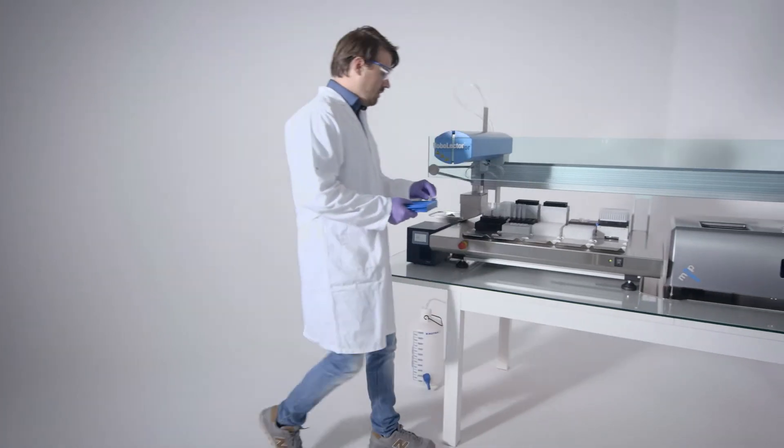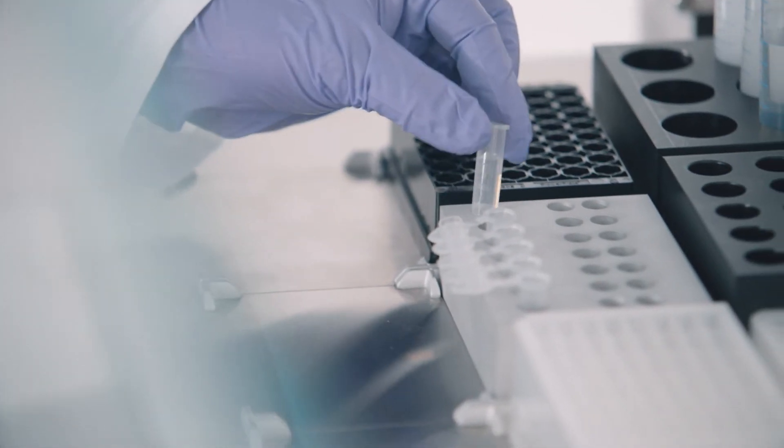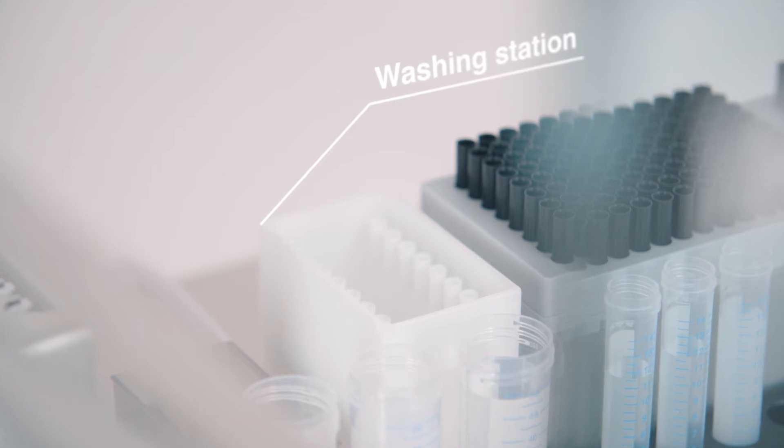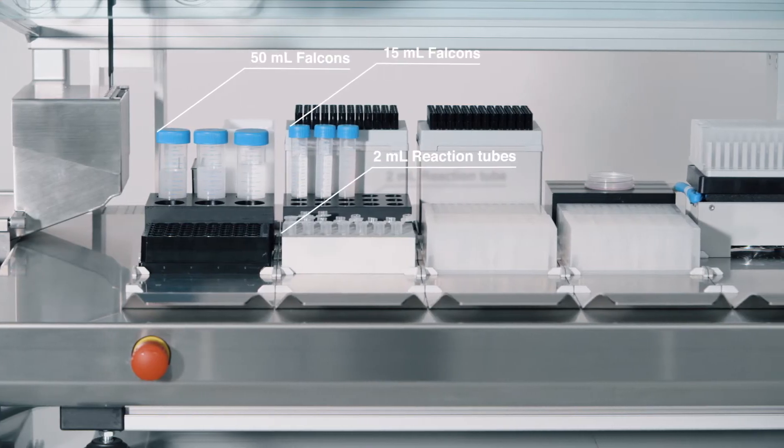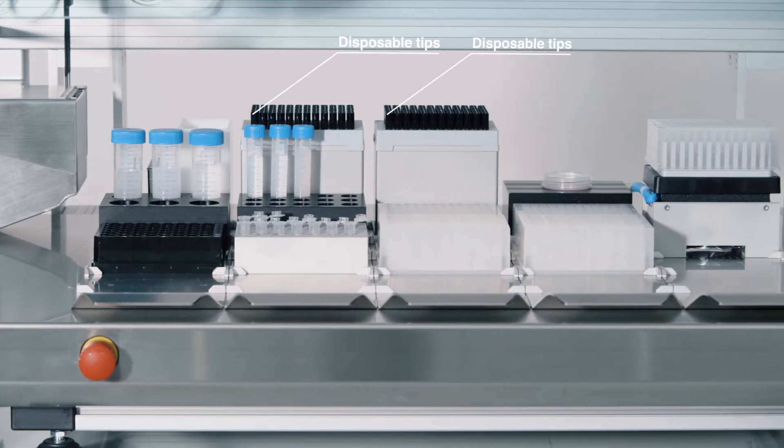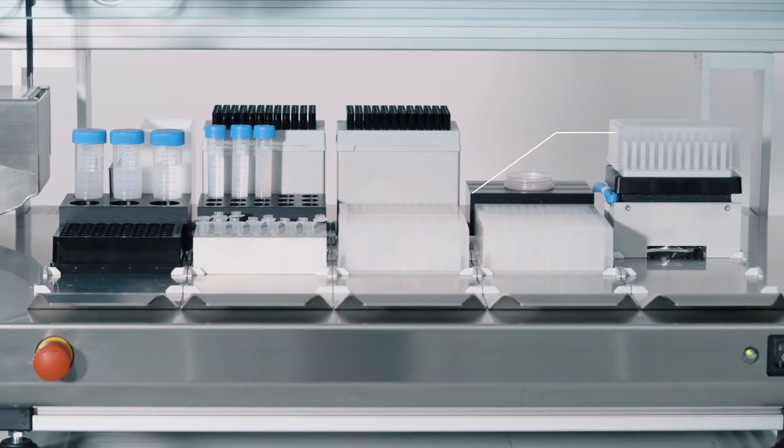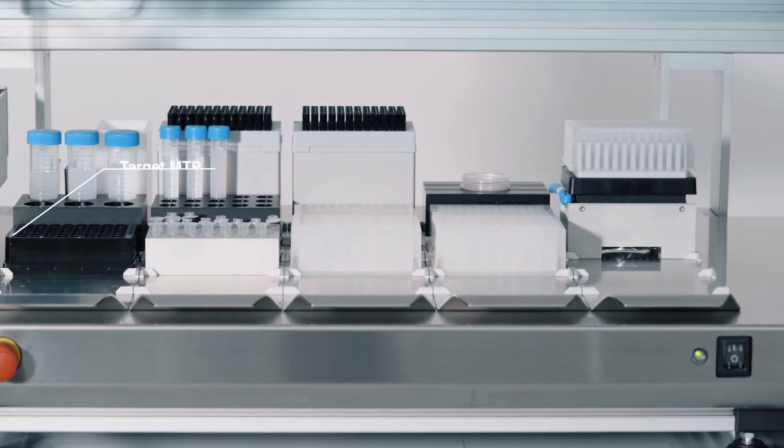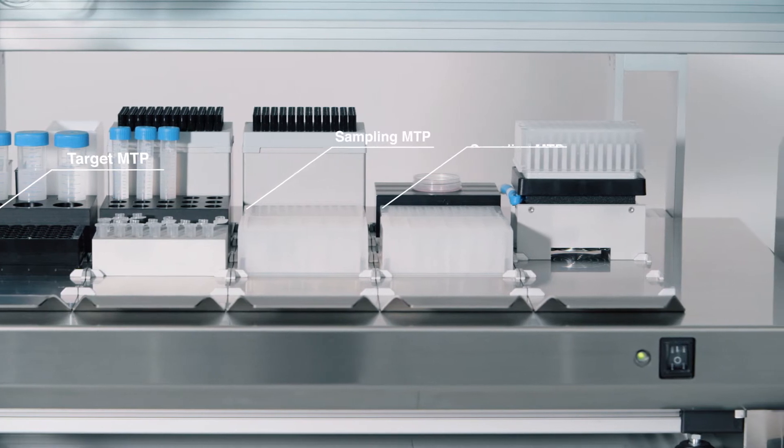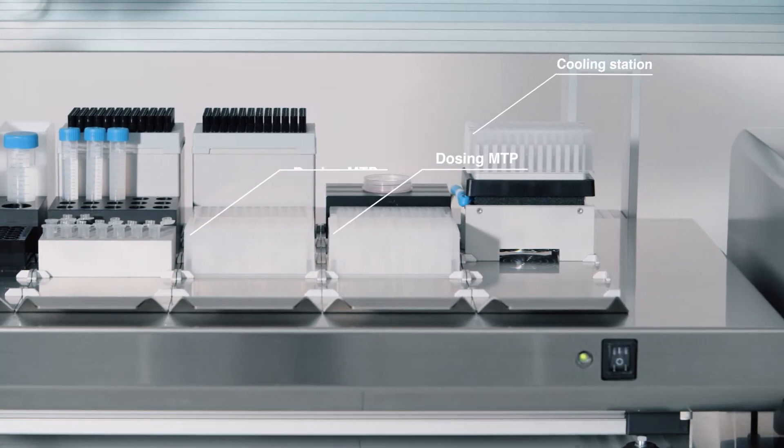The operator can choose between various components, such as a washing station, racks for reaction tubes, disposable tip pickup stations, a magnetic stirrer, MTPs for media preparations, sampling and dosing stations, and cooling stations.